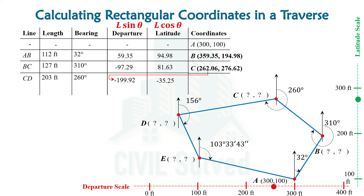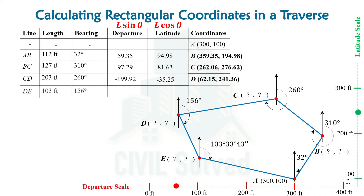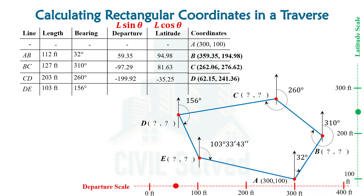Adding with the previous one we will be having the coordinates of D, and the same can be shown on this latitude and departure scale as well. Now we are left with the last point, which is point E. For that we need to calculate the latitude and departure of the DE line.